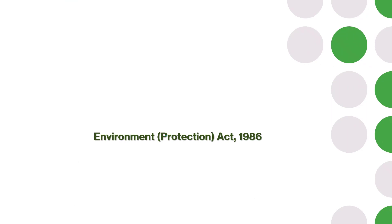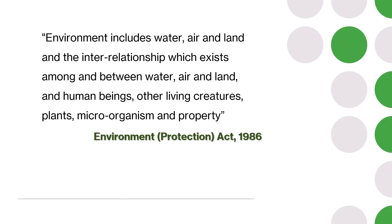According to the Environment Protection Act 1986, which was enacted to implement the decisions of the UN Conference on Human Environment held in Stockholm in 1972, the definition of environment is: environment includes water, air and land, and the interrelationship which exists among and between water, air and land, and human beings, other living creatures, plants, microorganisms, and property. This definition covers all aspects of the natural environment and the interactions between them.